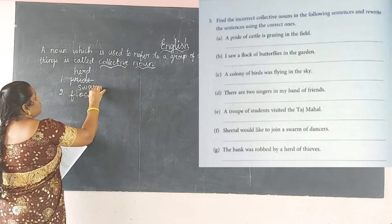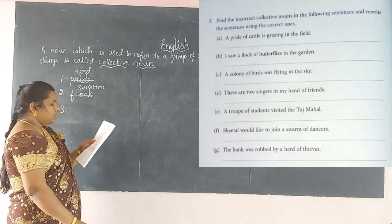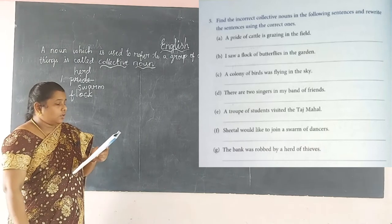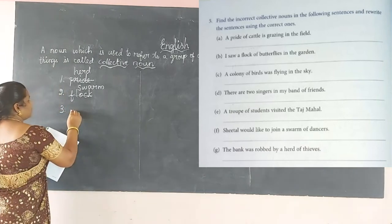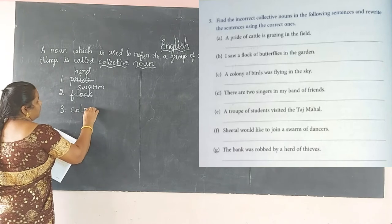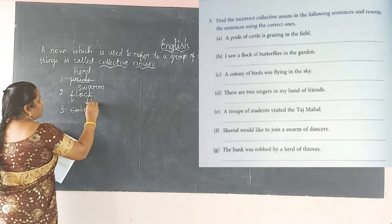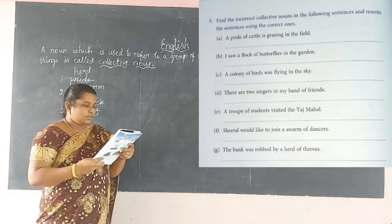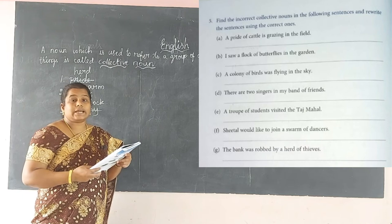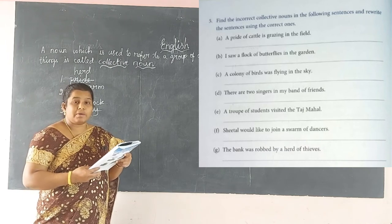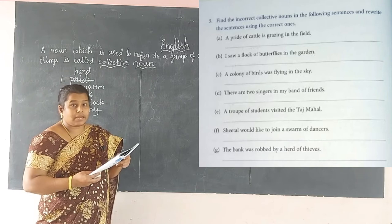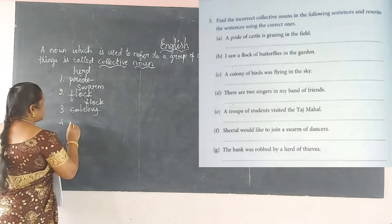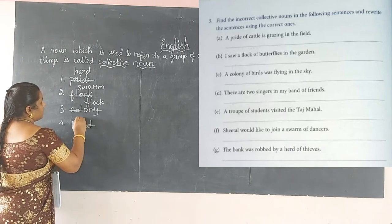Third: 'colony of birds' — 'colony' is used for ants; for birds the word is 'flock,' so cut 'colony' and write 'flock.' Fourth: 'a band of friends' — 'band' is for musicians, not friends; the correct form is 'a circle of friends,' so cut 'band' and write 'circle.' Fifth: 'troop of students' — 'troop' is not used here; the correct form is 'class of students,' so cut 'troop' and write 'class.'